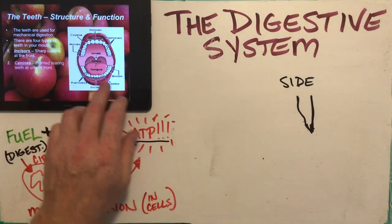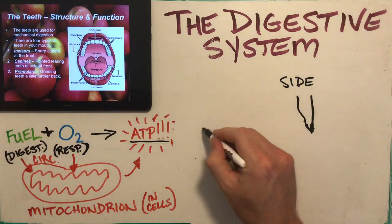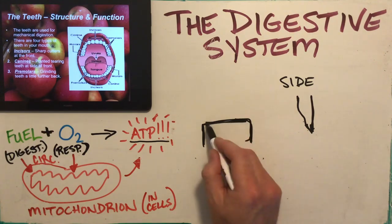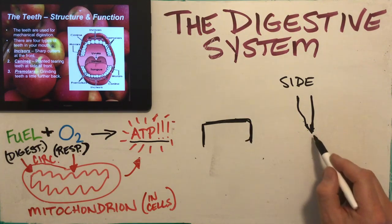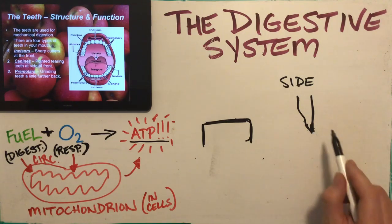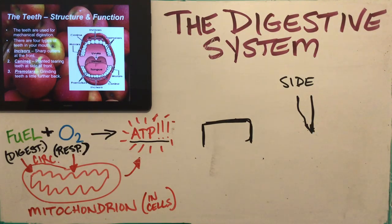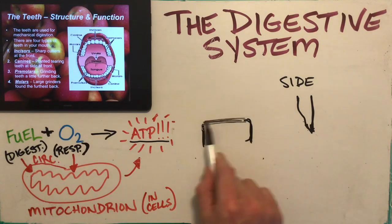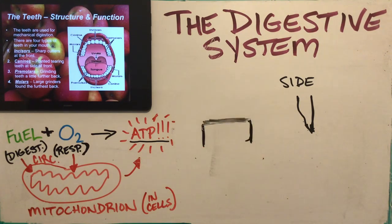Then we have the premolars and molars, which are much more squared and roundish in shape. Their job is to grind and crush the food. The incisors are for cutting, the canines are for tearing — think about a piece of taffy that you'd bite off to the side so those canines can pierce and rip it apart. Further back, the premolars and molars have a larger surface area great for crushing food, like a car compactor in a junkyard grinding things into a paste.